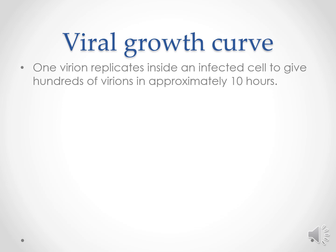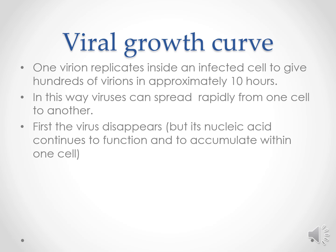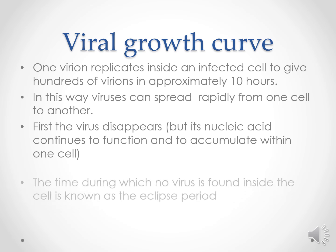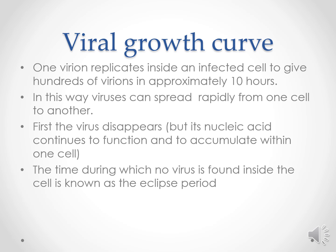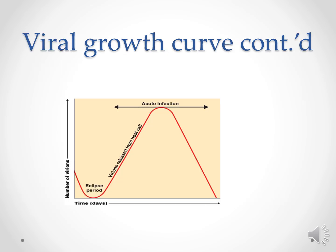The viral growth curve: one virion replicates inside the infected cell to give hundreds of virions, approximately in 10 hours. In this way the virus can spread rapidly from one cell to another. First the virus disappears but the nucleic acid continues to function and carry activity within the cell. The time during which no virus is found inside the cell is known as the Eclipse period. The Eclipse period ends with the appearance of the virus.